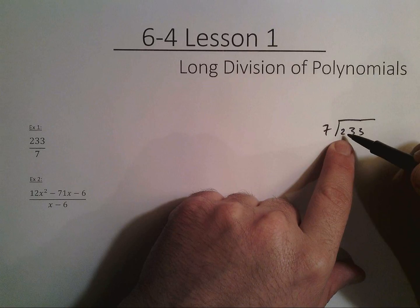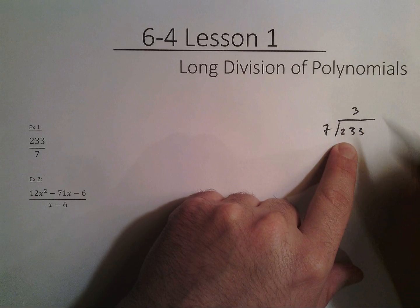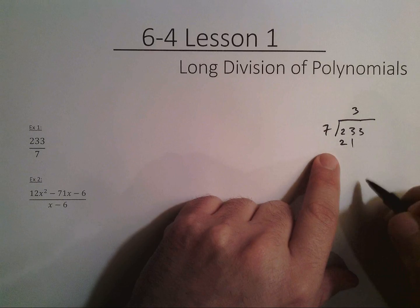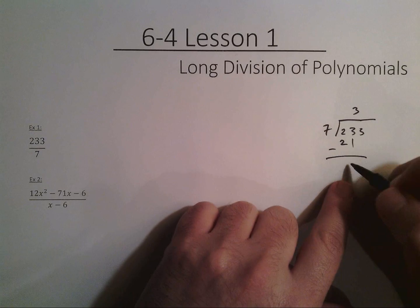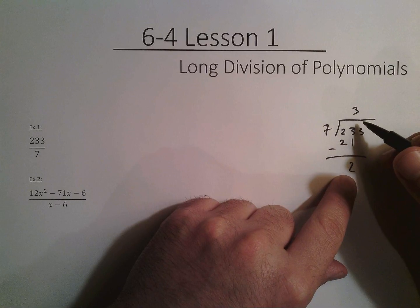Does 7 go into 2? No, it doesn't. Does 7 go into 23? Yes, it does. It goes in there 3 times with 21. And now we subtract, and we get 2 out. 7 is going to 2, so I know that 3 was the full number I could use.